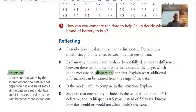Now, the reflecting part gives you some indication of what you should be thinking about, or some tips. And it says this, describe how the data in each set is distributed. Describe any similarities or differences between the two sets of data. B says, explain why the mean and median do not fully describe the difference between these two brands of batteries. So, as you recall, the mean is the average, the median is the middle number.